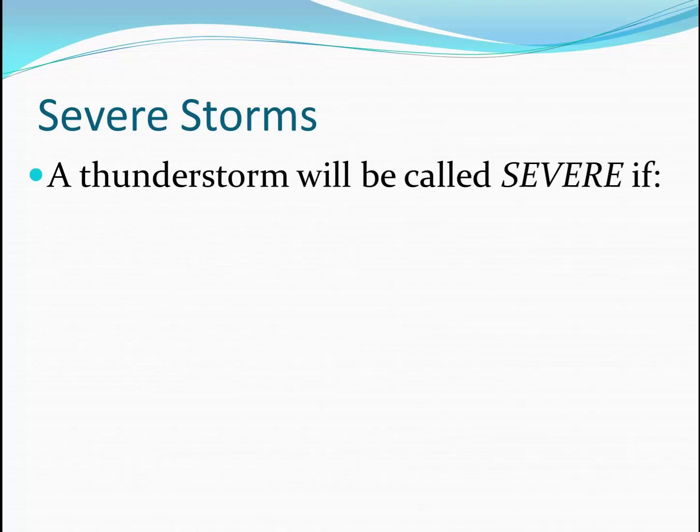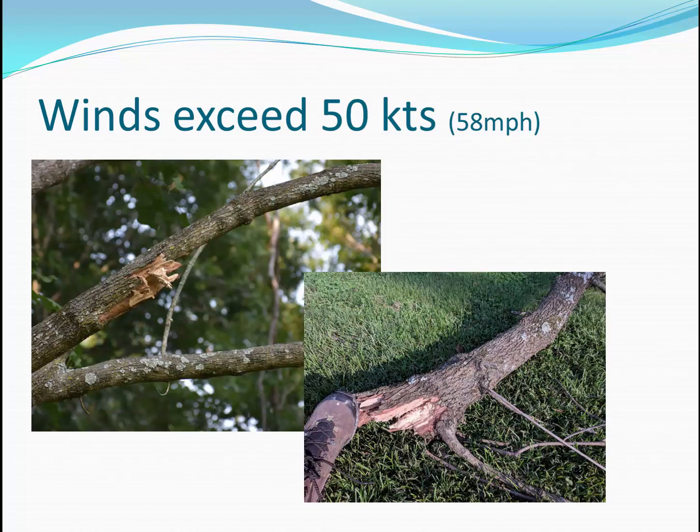I've mentioned severe storms several times — what makes a storm severe? Any thunderstorm can be called severe if it meets one of the following three criteria. If it has winds that exceed 50 knots, that's approximately 58 miles an hour. You can identify these strong winds as this is the kind of wind that will cause large branches to break. You can see this limb is about eight inches in diameter. Breaking large, healthy tree limbs is a sign of extremely strong wind.